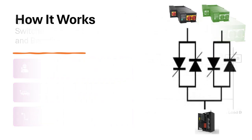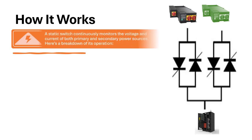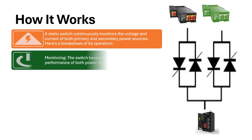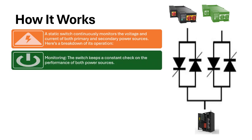How it works: A static switch continuously monitors the voltage and current of both primary and secondary power sources. Here is a breakdown of its operation. Monitoring: The switch keeps a constant check on the performance of both power sources.